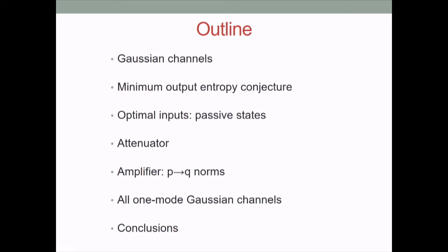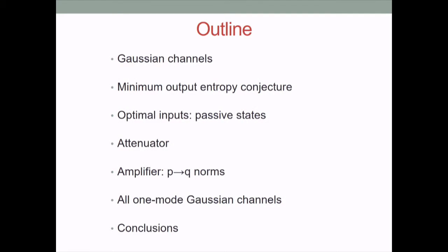I will need some more steps, considering as an intermediate step proving that Gaussian states optimize the so-called p-to-q norms of the amplifier. I will explain what these p-to-q norms are, and then finally the proof for all the Gaussian channels and the conclusions.